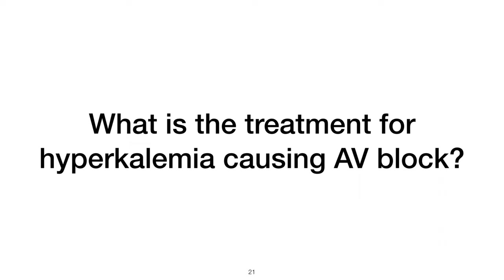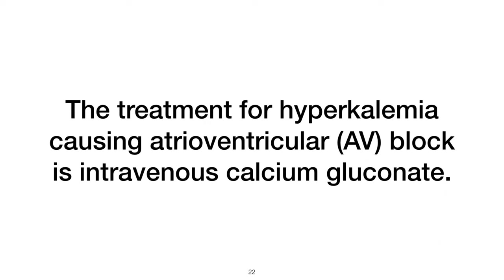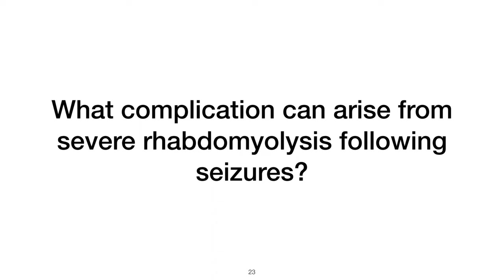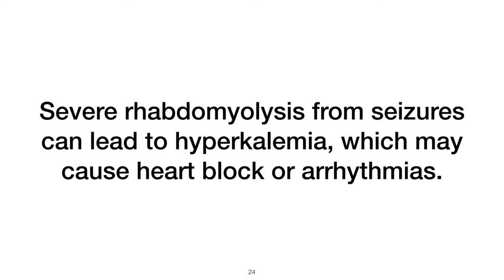What is the treatment for hyperkalemia causing AV block? The treatment for hyperkalemia causing atrioventricular AV block is intravenous calcium gluconate. What complication can arise from severe rhabdomyolysis following seizures? Severe rhabdomyolysis from seizures can lead to hyperkalemia, which may cause heart block or arrhythmias.